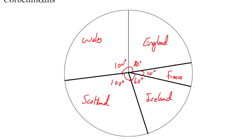So we've got our pie chart. We've labelled England, France, Ireland, Scotland and Wales, and I've put the angles on. That's how you draw a pie chart.